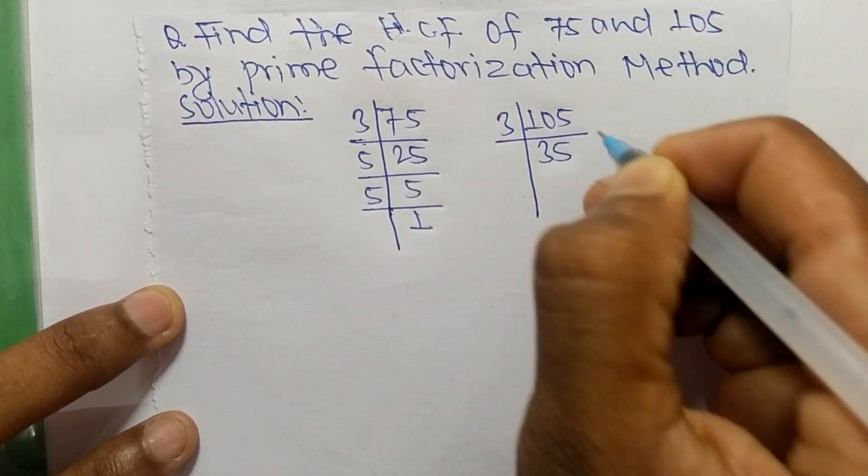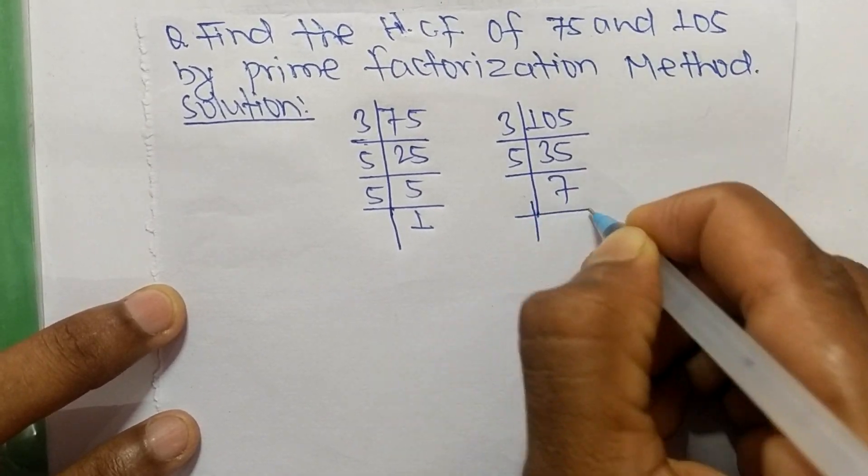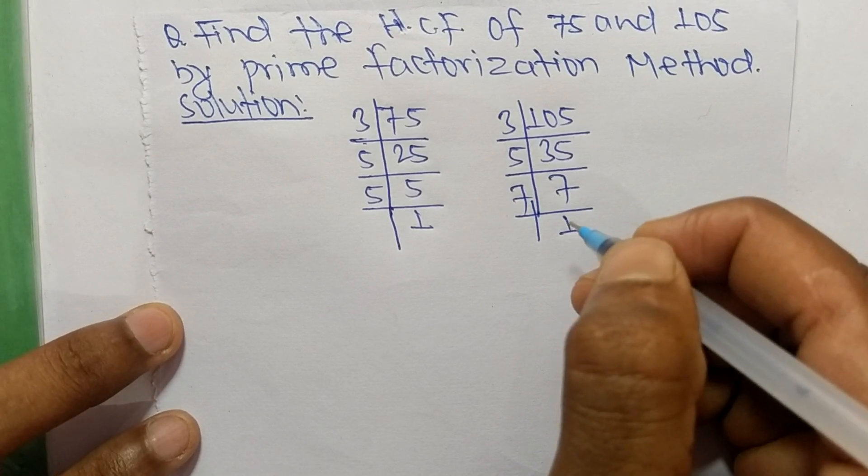3 times 35 equals 105, 5 times 7 equals 35, and 7 times 1 equals 7. Now from these...